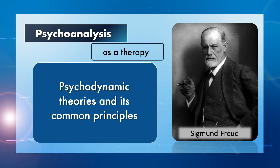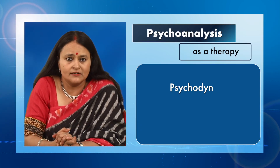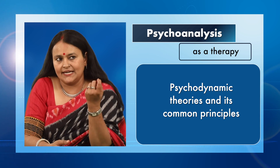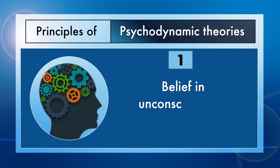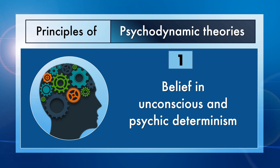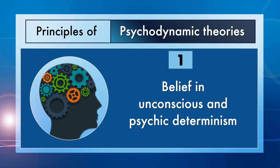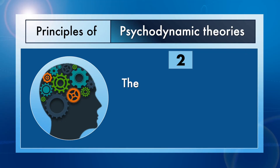Theories that have their basis in Freudian psychoanalysis are called psychodynamic theories, and they all share some common principles. One of the most important principles is the belief in the unconscious and psychic determinism, which basically means that our thoughts, feelings, behavior, and personality are determined by the unconscious aspects of the psyche — by unconscious motivation or childhood events.